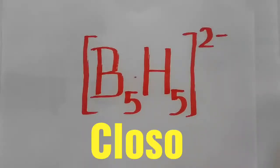From the previous video on boron chemistry, we know that the structure is Closo.